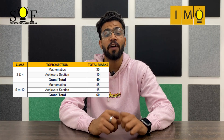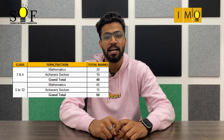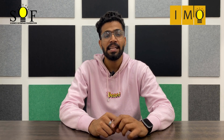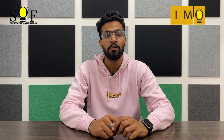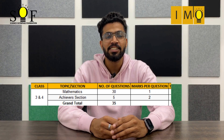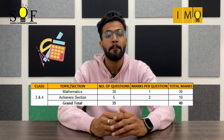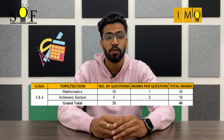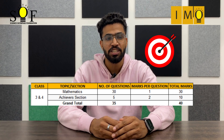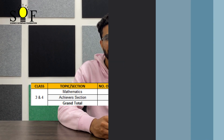Moving on to SF IMO. SF IMO is also going to have a total of 40 marks for classes 3 and 4, whereas 60 marks for classes 5 to 12. These marks will be divided into two sections: Mathematics and Achievers section. For classes 3 and 4, Mathematics section will have 30 questions carrying 1 mark each, totalling 30 marks. Achievers section will have 5 questions carrying 2 marks each, totalling 10 marks.